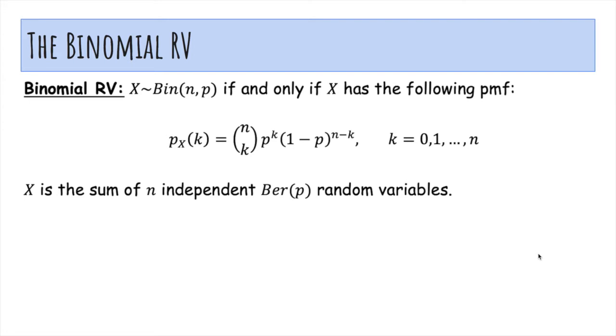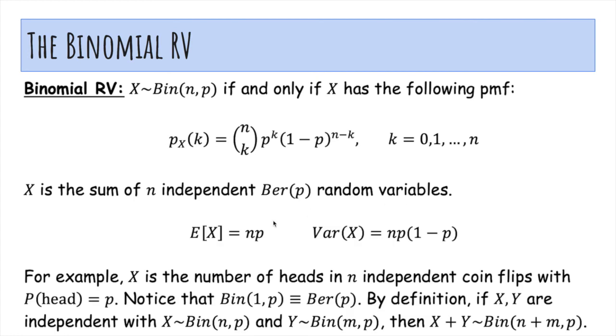Here's a summary of what we talked about. X is the sum of n independent Bernoulli random variables to be binomial, and here are the mean and variance.